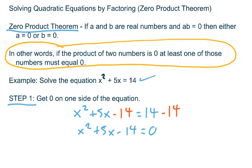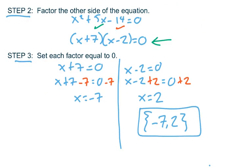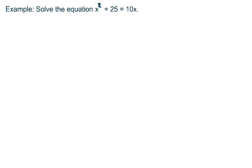Three steps: get zero on one side, factor the other side, set each factor equal to zero. Let's do a couple more examples.